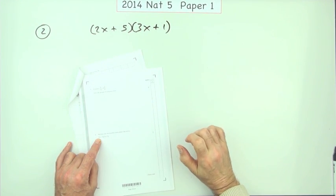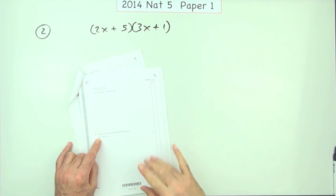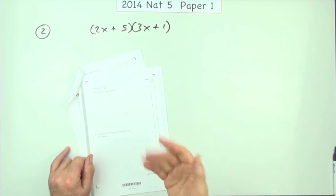So number two then from the first paper of the 2014 National 5, multiply out two brackets for two marks.